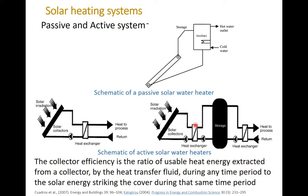The active system may also have a heat exchanger between the water from the storage and the application. So, the efficiency of the solar collector is the ratio of usable heat gained from the collector divided by the heat transferred to the fluid during any period of time. Basically you have to compare how much energy you gain from the sun and how much energy is delivered to the solar collector. With that, I would like to stop here and I welcome your feedback. Thank you, have a good day.